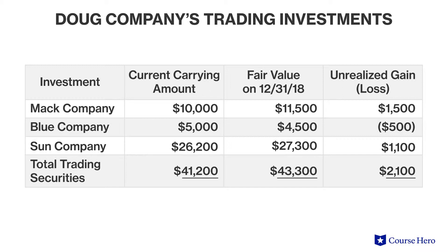The value of the trading securities on December 31st exceeds their cost by $2,100. Although the securities have not yet been sold, the unrealized gains are included in earnings on the income statement, and the book value of the trading securities on the balance sheet is adjusted up to their fair value.